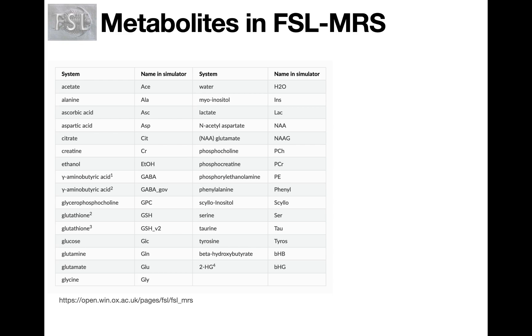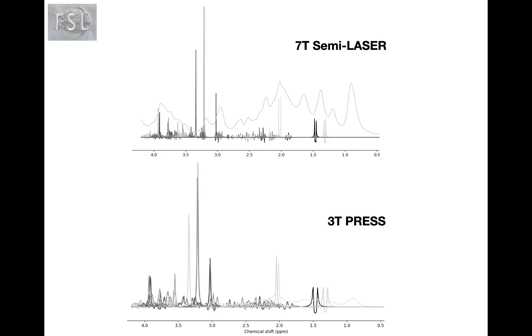This table shows all the metabolites for which the chemical structure is stored in the software. Here are two examples of the results of these simulations for a 7T semi-LASER sequence and a 3T PRESS sequence. So you can appreciate the similarities but also striking differences between the two.